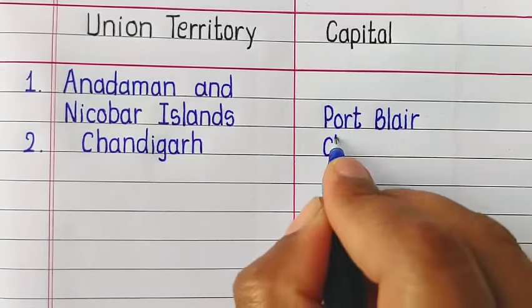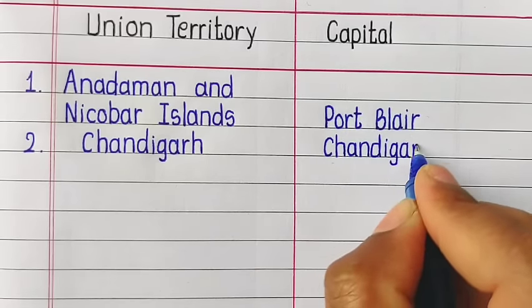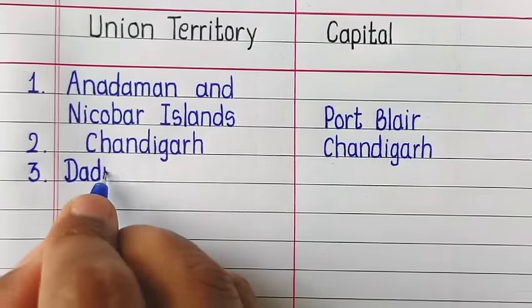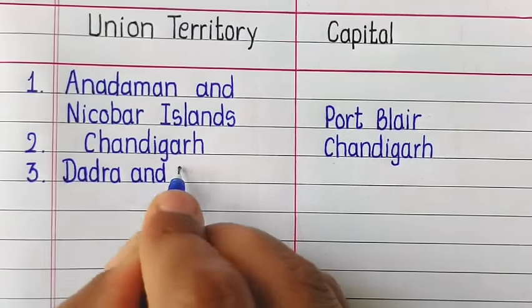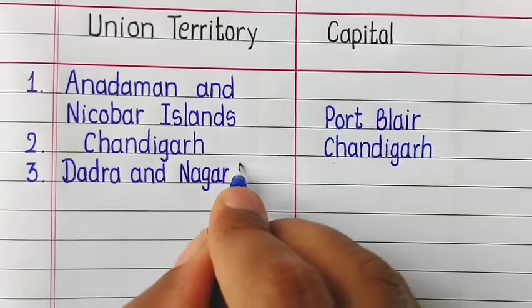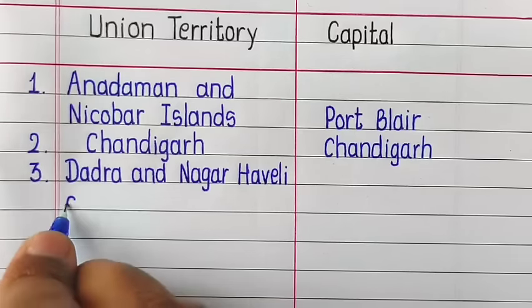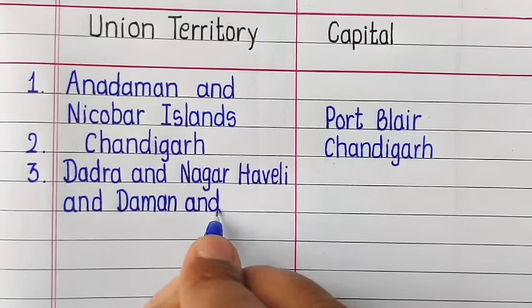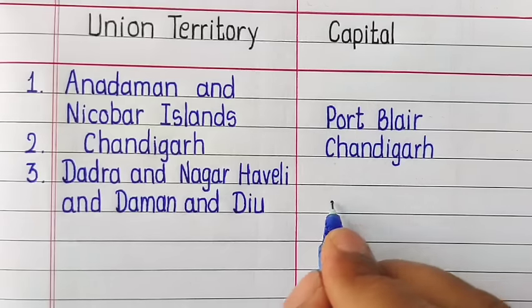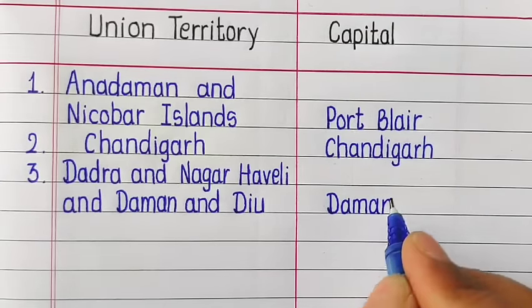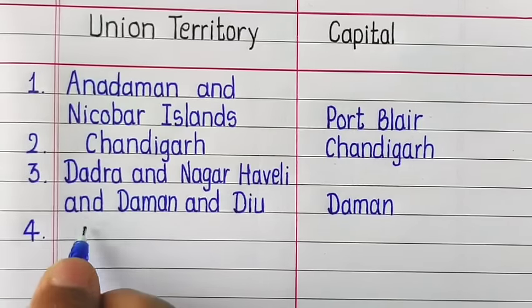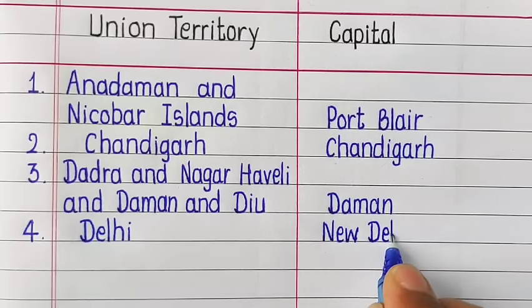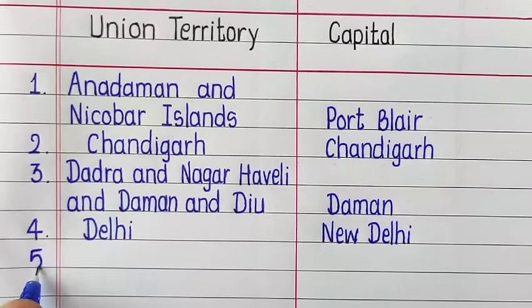Chandigarh — Chandigarh. Dadra and Nagar Haveli and Daman and Diu — Daman. Delhi — New Delhi.